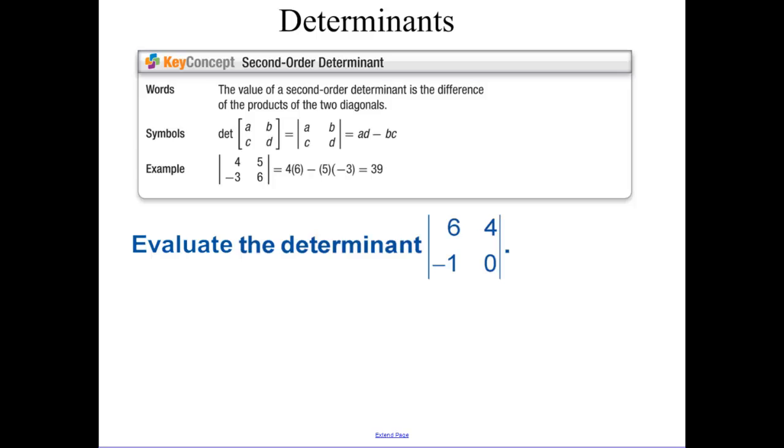Today we're going to be talking about finding determinants. You find determinants of only square matrices, where the number of columns equals the number of rows.